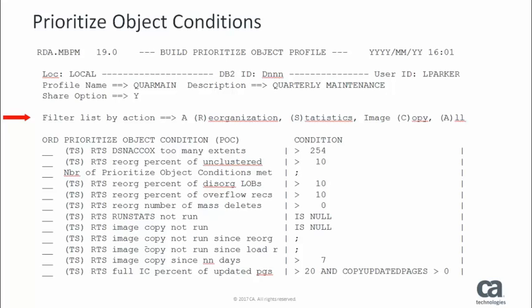POCs are very similar to Extract Object Conditions and Action Conditions. Due to size constraints, this screen shows only a partial list of the available conditions. While in the product, you can scroll down to see all available conditions. The order of the POCs and their values correlate to their importance in determining the priority order of an object. In this example, we select Extents as the first POC and Unclust as the second POC. CA Database Analyzer will evaluate these POCs for all objects in the Extract Procedure and use the POC values to order the objects for processing. We press F3 to save our work and return to the previous panel.